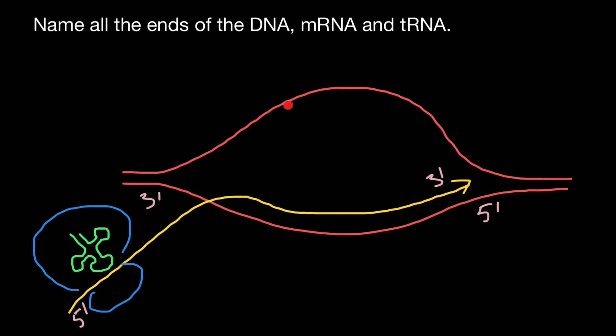And another strand of the DNA, which is going to be complementary to this strand of the DNA, would go in the different direction and is going to have five prime end here and three prime end here.